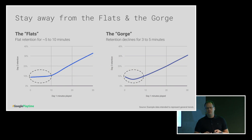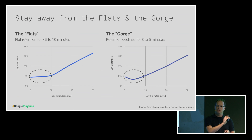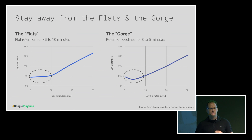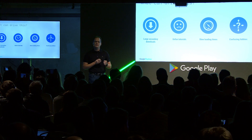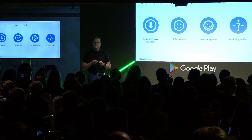Two anti-patterns we've been able to identify in Google Play's data are what I've started dubbing 'the flats' — largely flat retention persisting for the first 5 to 10 minutes before beginning to rise — and 'the gorge,' where retention actually falls for the first couple of minutes before rising. These are two patterns worth checking for in your own game data. Get your data teams, your data scientists, and your business analysts to pull this and see what your game looks like. All of these have an adverse impact on that first 5 to 10 minute experience.